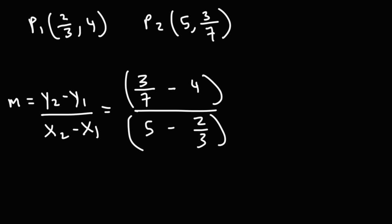So what I'm going to do is multiply by a multiple of these two denominators, or you could say by the common denominator. 7 times 3 is 21, so the common denominator for those two smaller fractions is going to be 21.